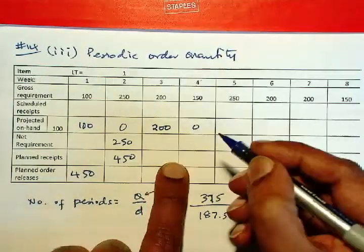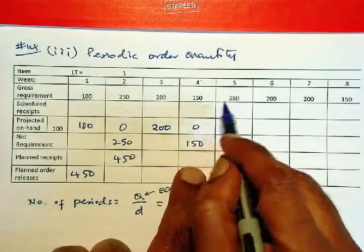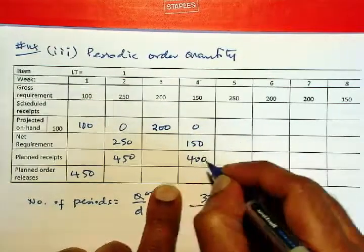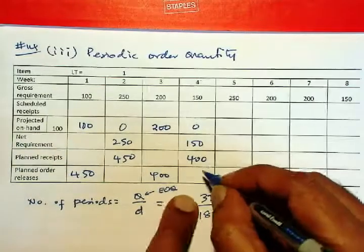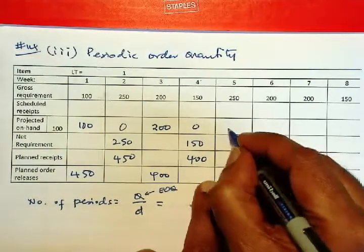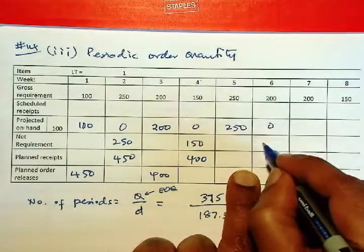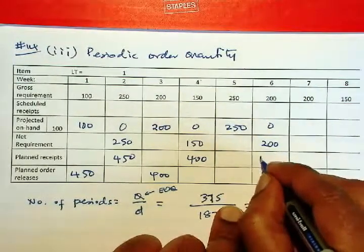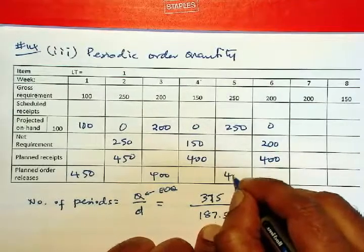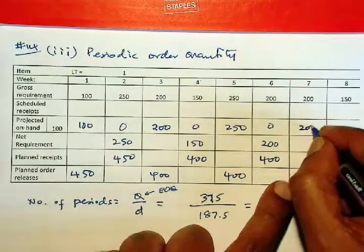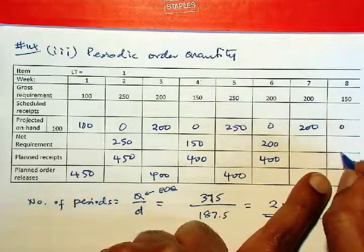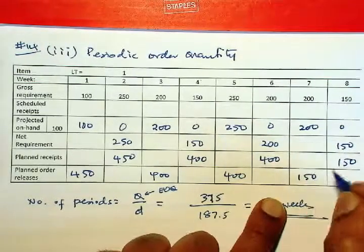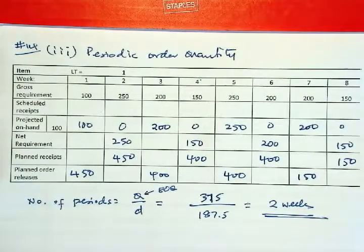And then here there is a requirement. Now we add 150 plus 250, which gives you 400. And then 400 minus 150 will give you 250. And then here again we add this requirement. We add 200 and 200 and get 400. And then that will be 200 there and 0. And since this is the last item, we have to order that last quantity.